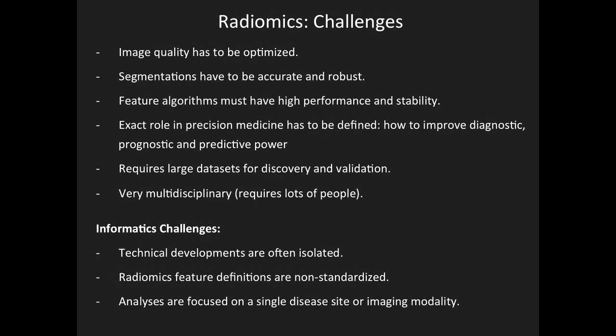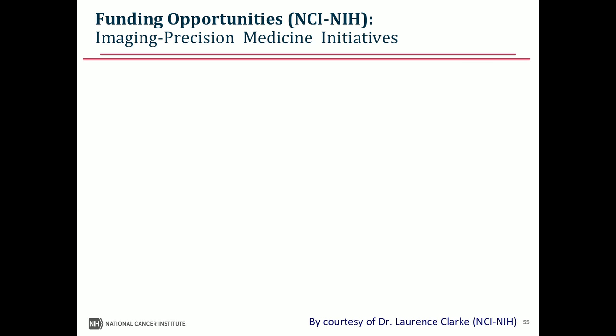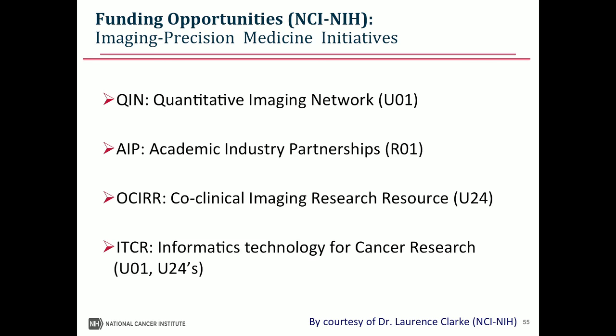There are also informatics challenges: a lot of technical developments are very isolated, people have their own radiomics toolsets and small datasets, and the same code is not used by others. Many features are not standardized — what I call a Laplacian of Gaussian entropy feature can be completely different from someone else's implementation still calling it the same name. The NCI asked me to advertise their initiatives in this area, including several large U01, U24 funding opportunities currently looking for proposals to address these challenges.